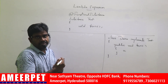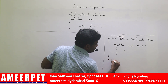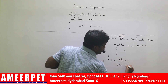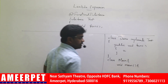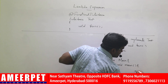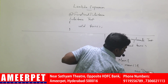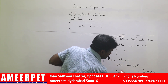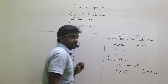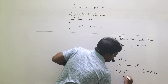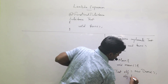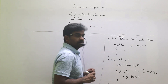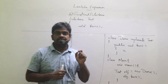Now, how can we access this? Suppose I take one more class — the main class — which contains the main method. Inside that, I am creating an object for the implemented class: new Demo. But we are giving the reference as an interface reference — Test obj. And simply we call obj.fun().